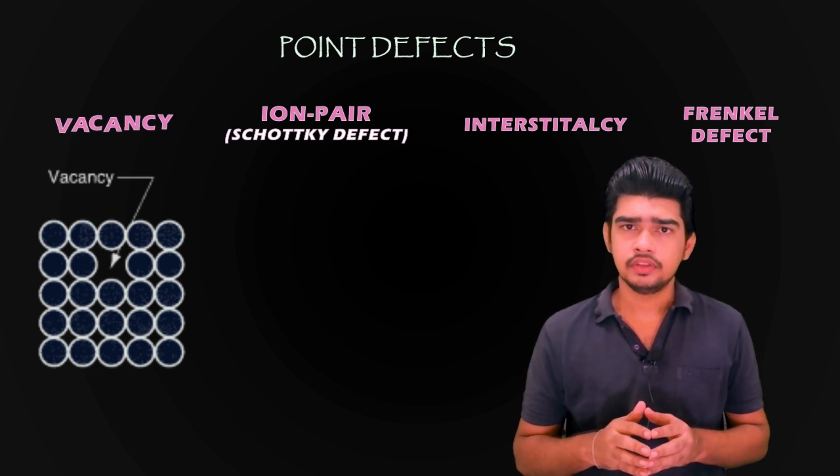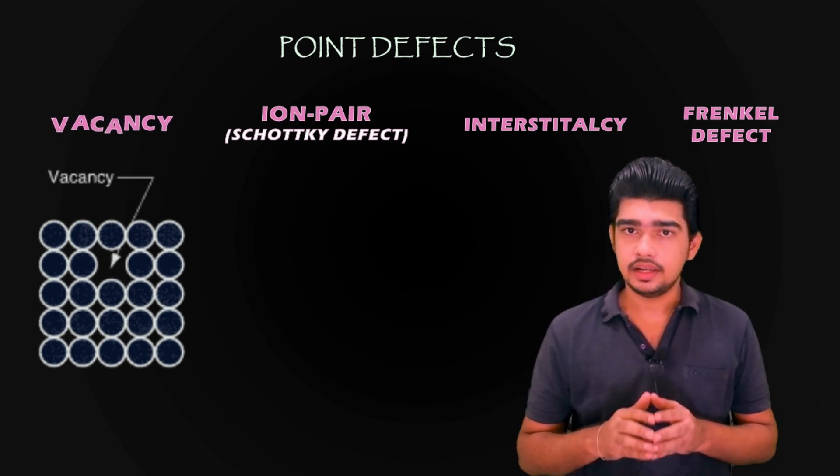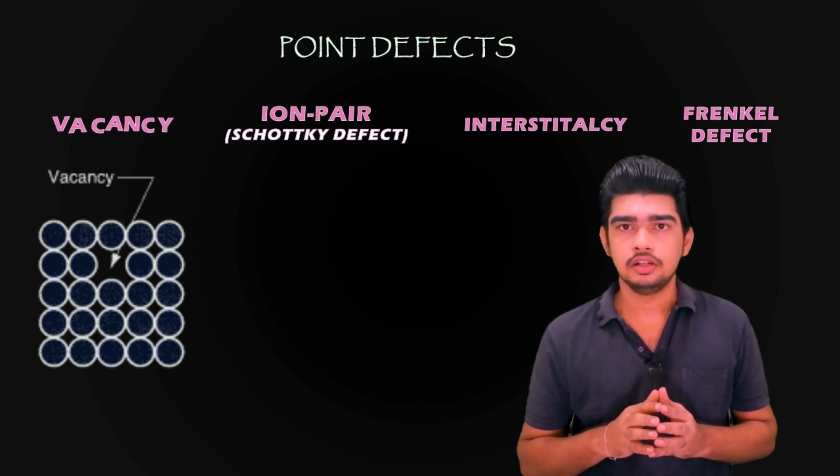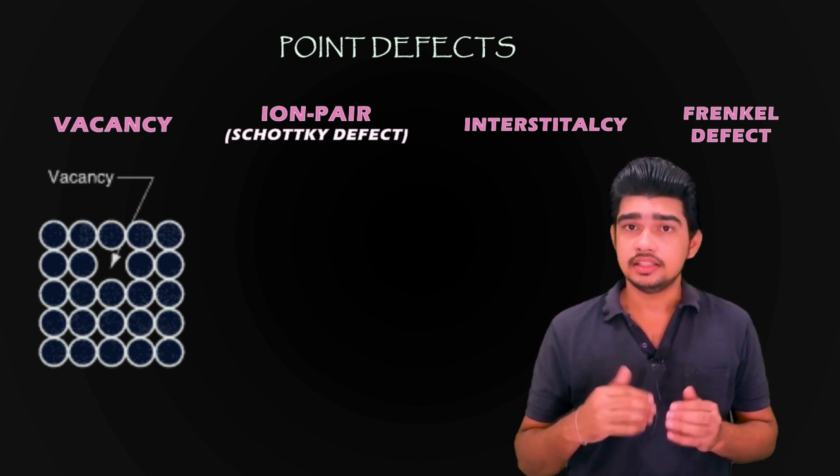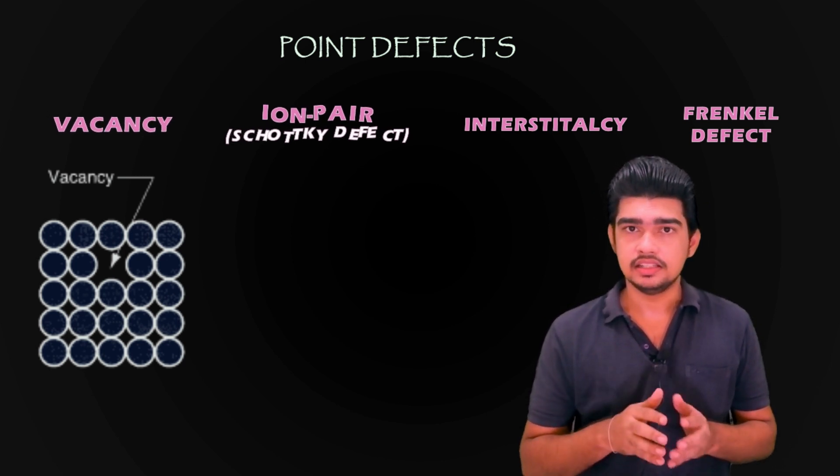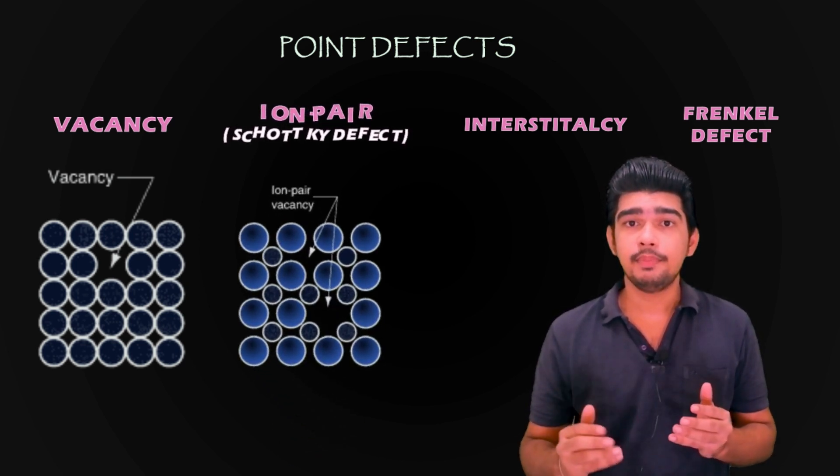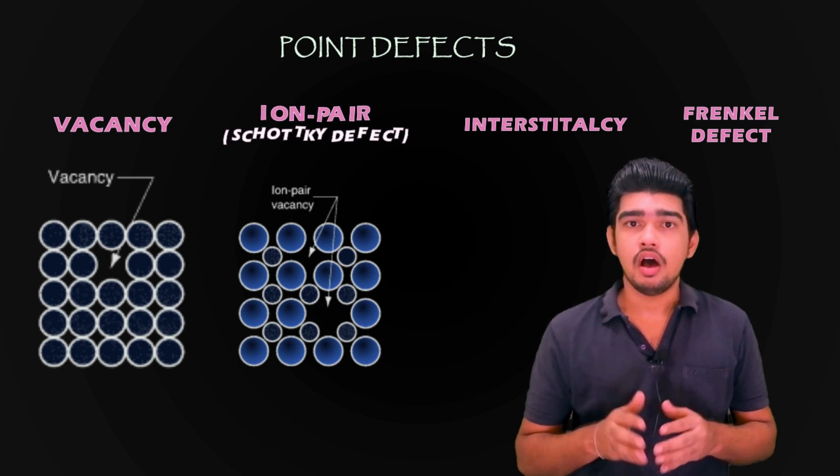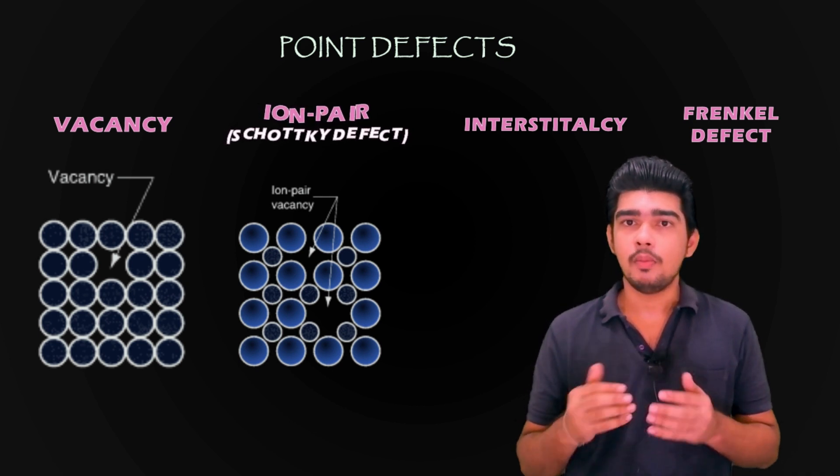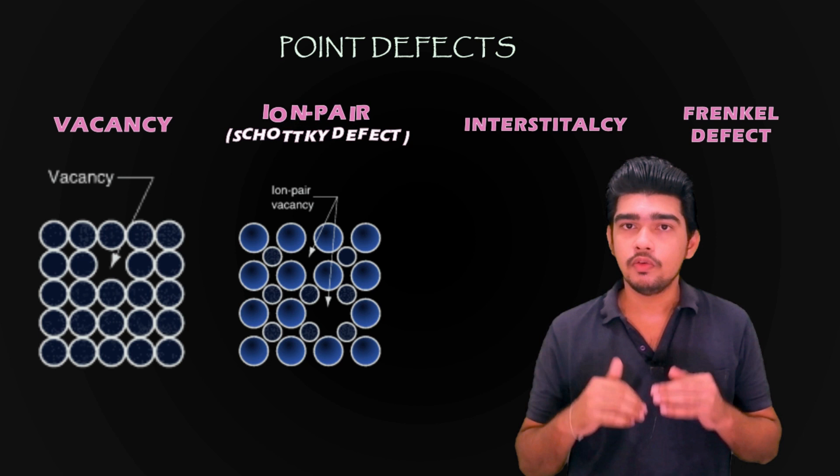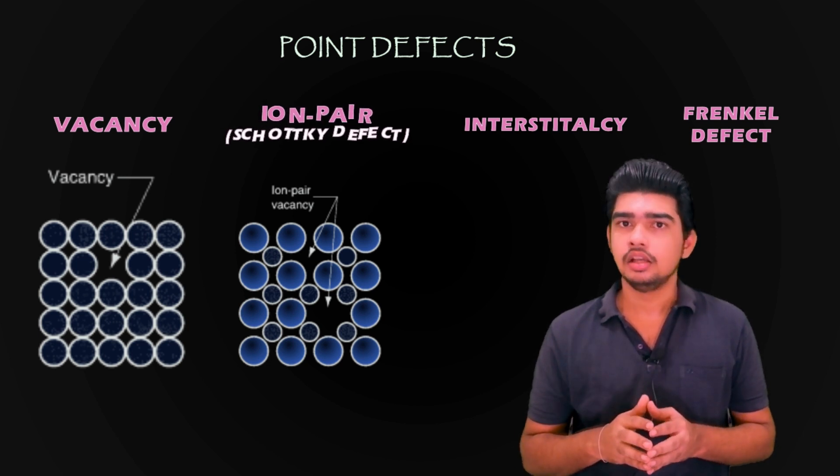The second one is ion pair vacancy, also called a Schottky defect, which involves a missing pair of ions of opposite charge in a compound that has an overall charge balance. Here in the image you can see a pair of atoms is missing from its position.